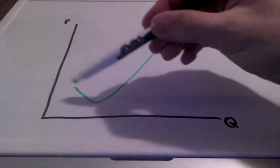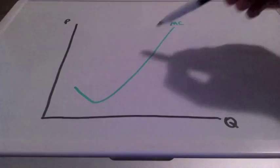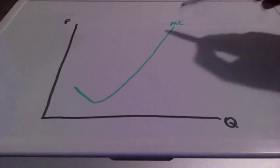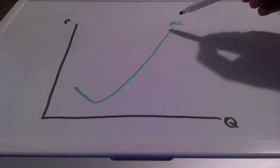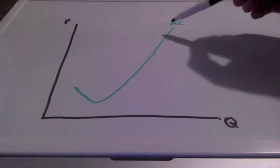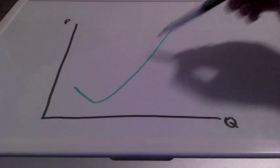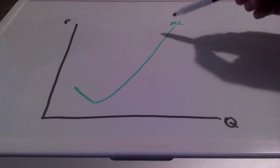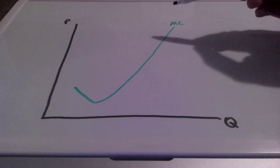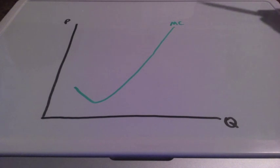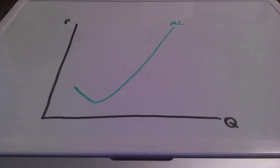The marginal cost curve is the most important cost curve. When we take a look at this curve, it's going to tell us if a firm is going to have profits, will the firm break even, will the firm have losses, or should the firm shut down.